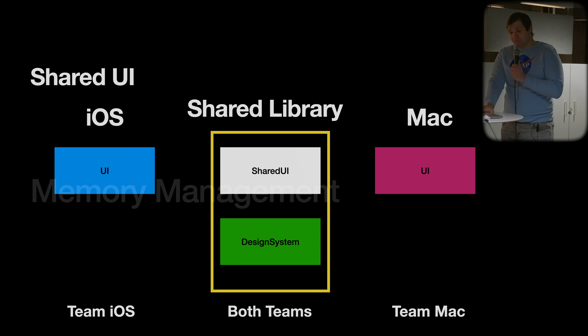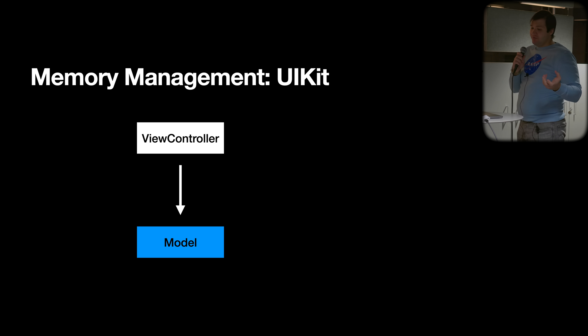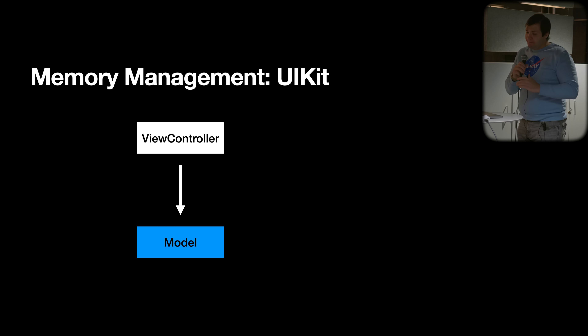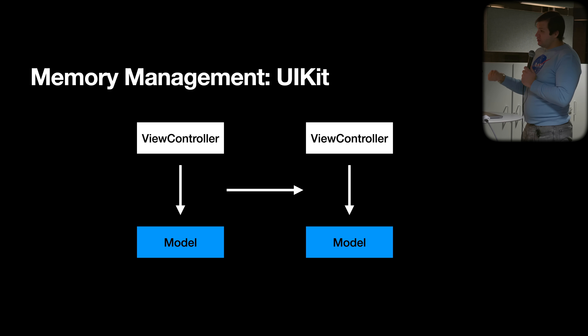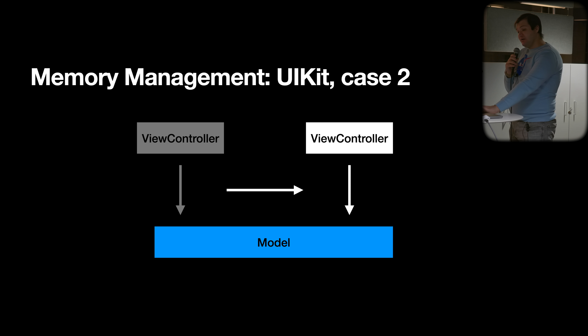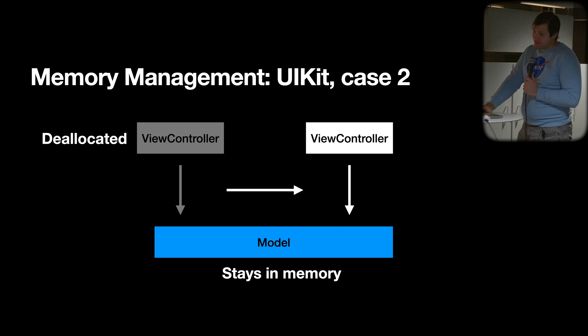Now let's talk about memory management. With classic UIKit it's simple — the view controller holds everything. Whether you use MVC, VIPER, or another architecture, everything is tied to the view controller. It's the centerpiece and you don't want to create parallel memory hierarchies. When a view controller is deallocated, the model is also deallocated, or if you have a shared model, it stays in memory until all view controllers referencing it are deallocated. Very simple.